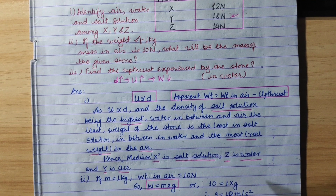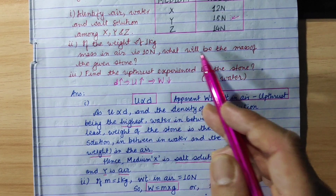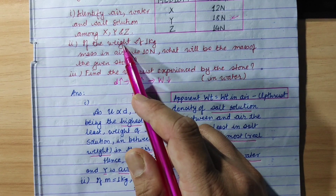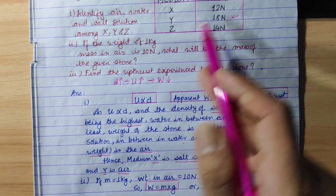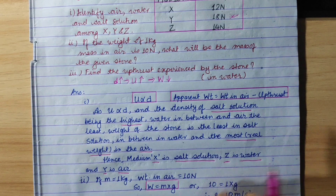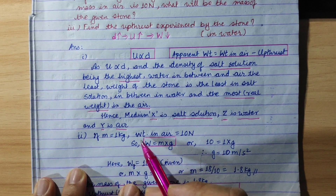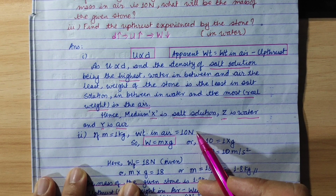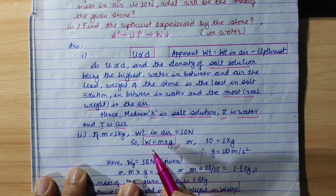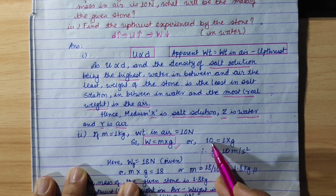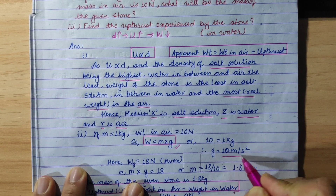Now let's go to the second part. If the weight of 1 kg mass in air is 10 newton, what will be the mass of the given stone? If mass equals 1 kg, then weight in air is 10 newton. The formula is weight equals mass times g, where g is 10 meters per second squared.